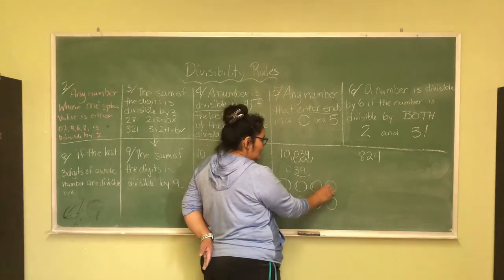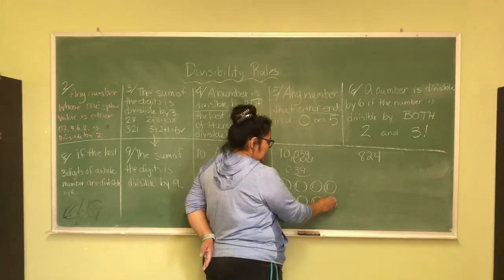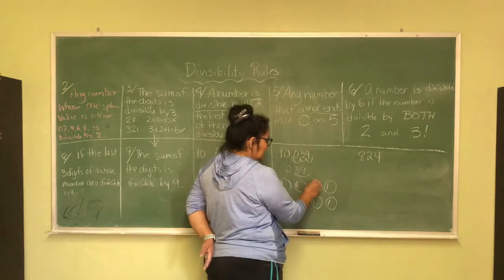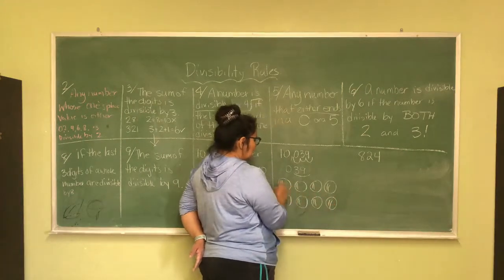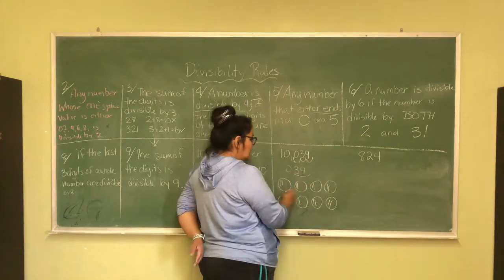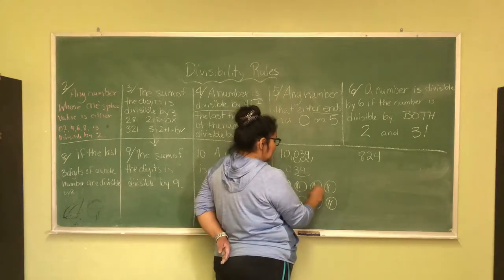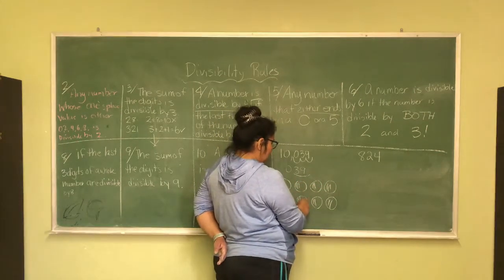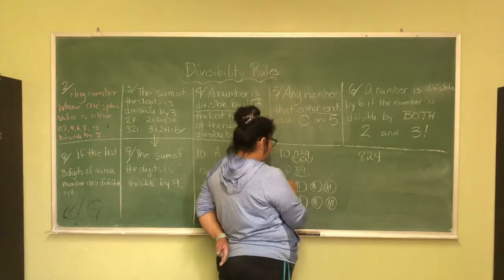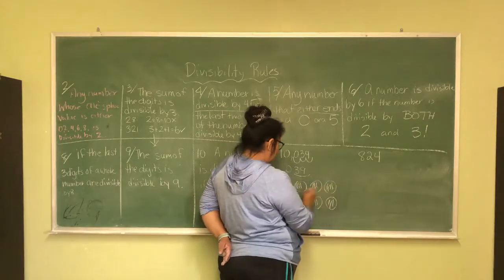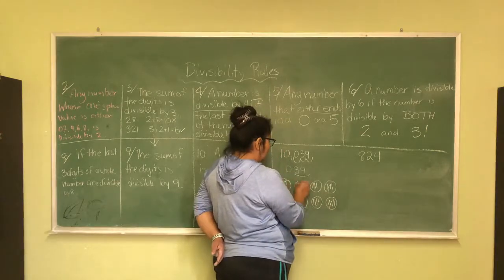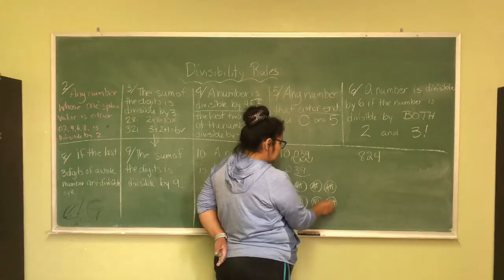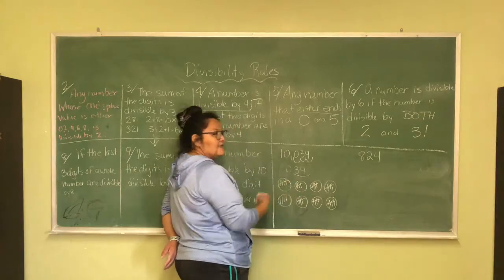So, I'm going to go 1, 2, 3, 4, 5, 6, 7, 8, 9, 10, 11, 12, 13, 14, 15, 16, so I'm just going to keep going here. 16, 17, 18, 19, 20, 21, 22, 23, 24, 25, 26, 27, 28, 29, 30, 31, 32, 33, 34, 35, 36, 37, 38, 39. It doesn't work.